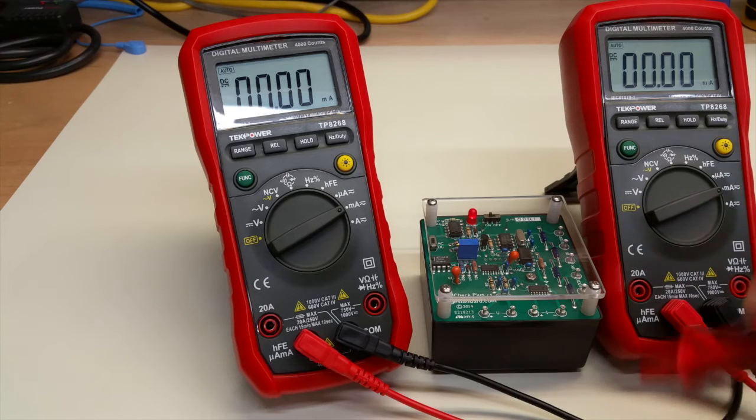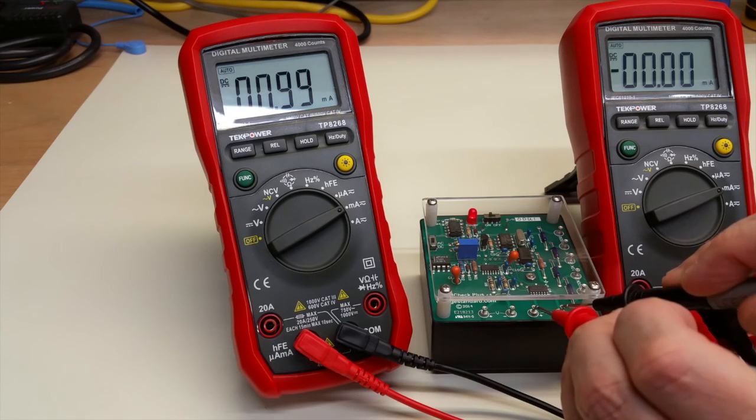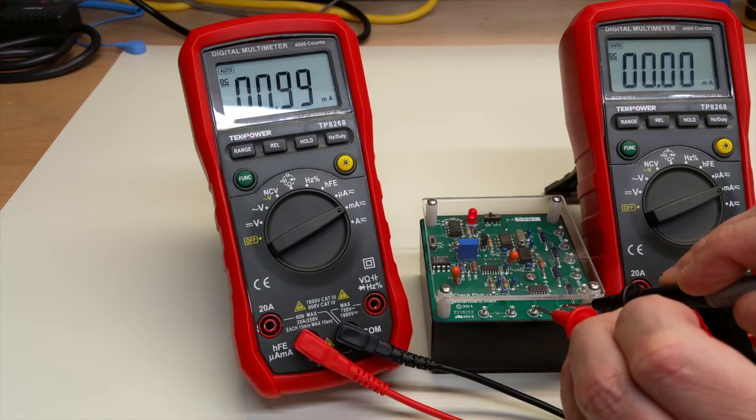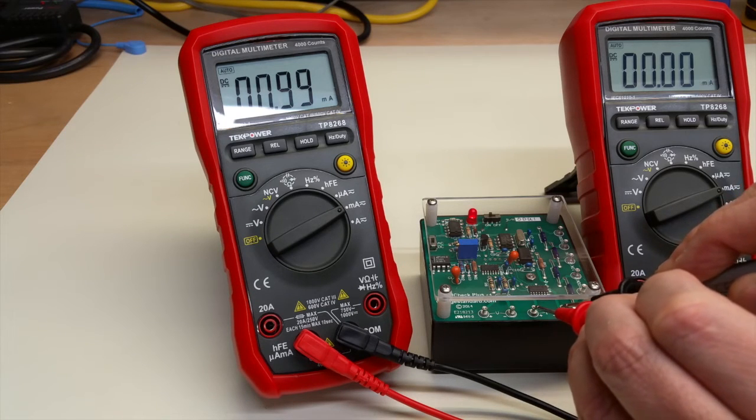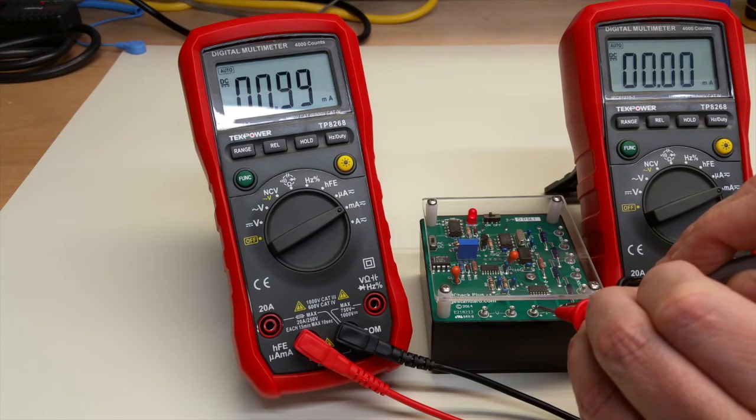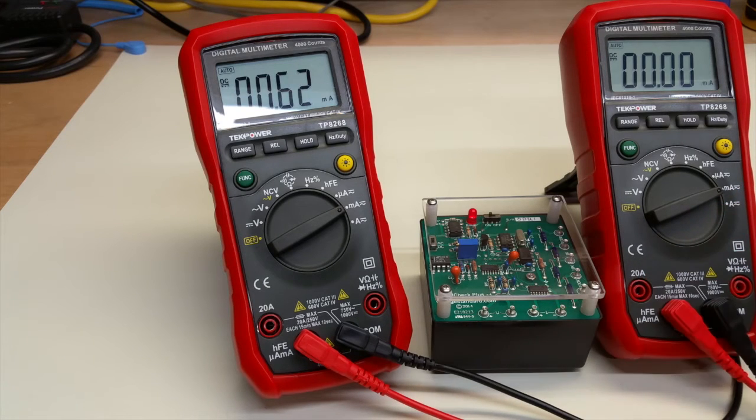And now for the other meter, and we get 0.99, essentially 1 milliamp as well. So again, both these meters are in spec and they both agree reasonably well with one another fresh out of the box. So so far, so good.